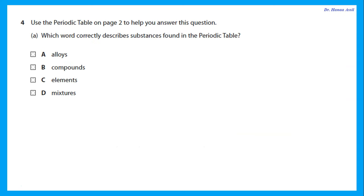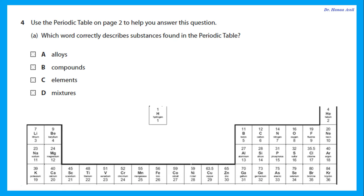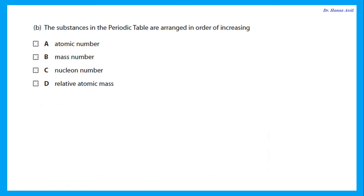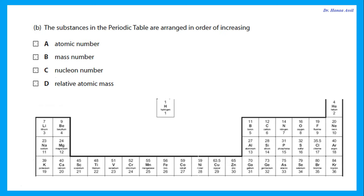Use the periodic table on page 2. Which word correctly describes substances found in the periodic table? The periodic table is a table of elements. The substances in the periodic table are arranged in order of increasing atomic number — not mass number. We arrange them according to atomic number, going from hydrogen, helium, lithium, beryllium, boron, carbon, nitrogen, and so on.